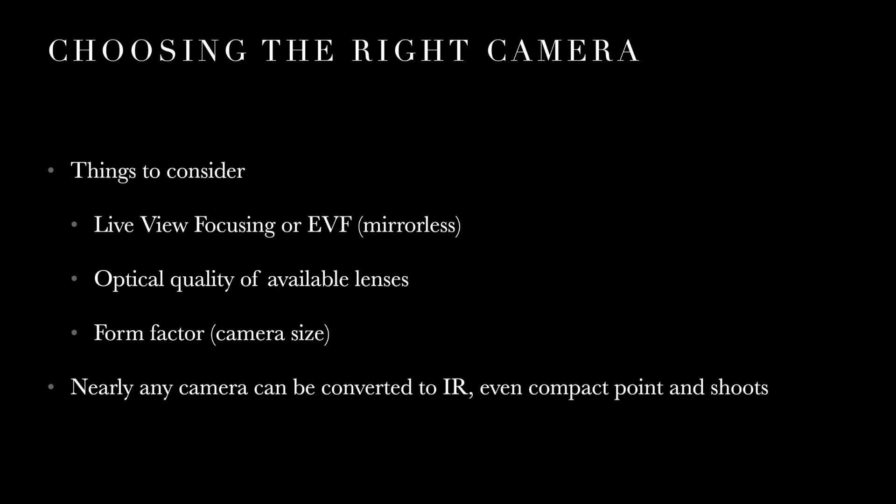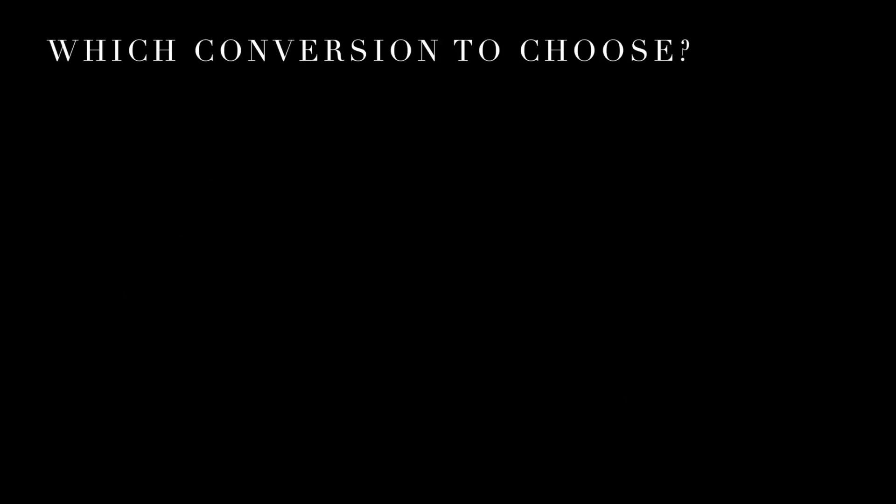You can convert pretty much any digital camera to infrared, including compact point-and-shoots. People used to get Canon G-series cameras like the G9 or G11 and convert them — they were good enough and nicely compact. Now, which conversion do you choose? When you go to the conversion company's website, you'll see choices labeled by name like 'standard infrared' or by wavelength — 720 or 590 nanometers. What you get out of your camera depends on the cutoff wavelength: how far up into the infrared the camera starts blocking the visible spectrum.